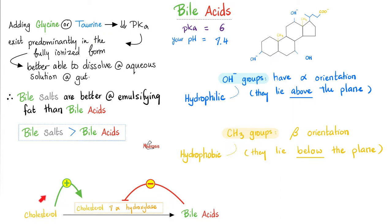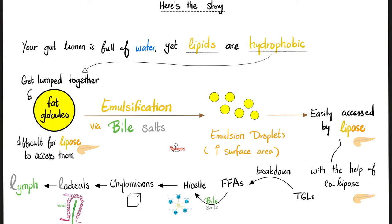Bile acids came from cholesterol. The key enzyme is cholesterol 7-alpha-hydroxylase — memorize this. If you have too much cholesterol, it stimulates cholesterol 7-alpha-hydroxylase to move faster, converting more cholesterol to bile acids. Conversely, accumulation of bile acids inhibits 7-alpha-hydroxylase — negative feedback, because we already have enough bile acids and don't need to make more.